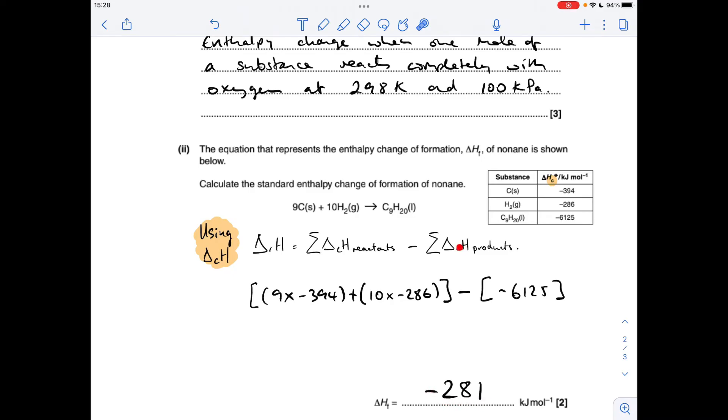If you get the equation the wrong way around, which is quite a common mistake, you get plus 281.